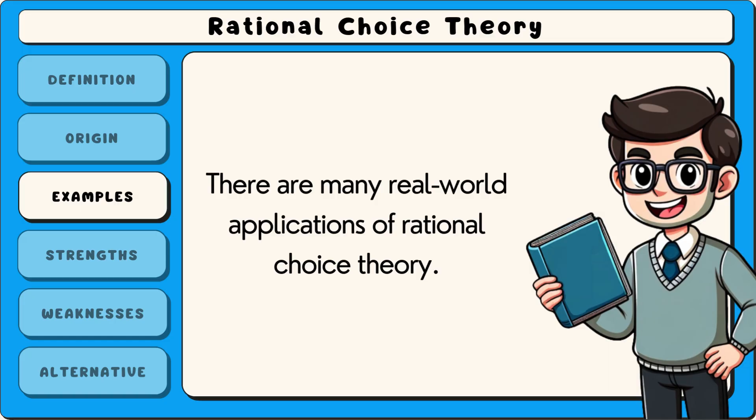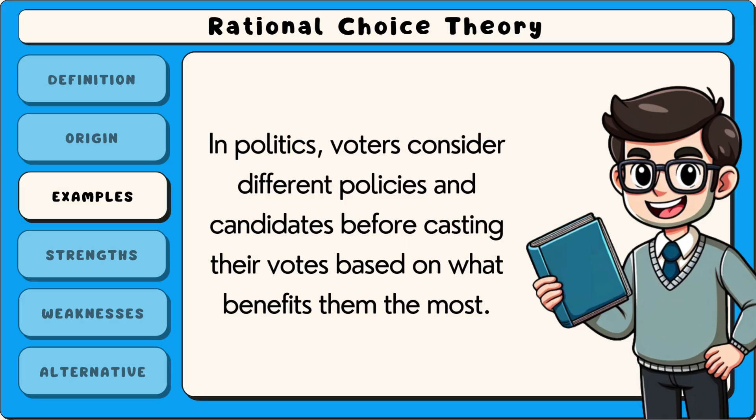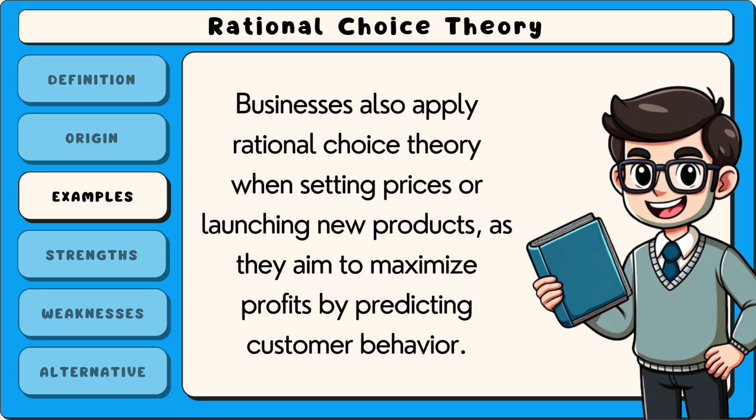There are many real-world applications of rational choice theory. In economics, consumers decide which products to buy by comparing prices and quality to get the best value for their money. In politics, voters consider different policies and candidates before casting their votes, based on what benefits them the most. Businesses also apply rational choice theory when setting prices or launching new products, as they aim to maximise profits by predicting customer behaviour.